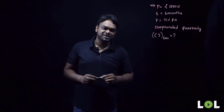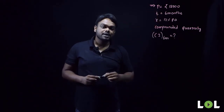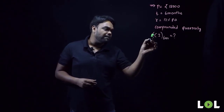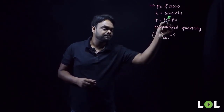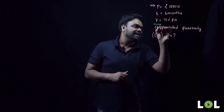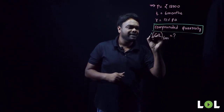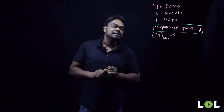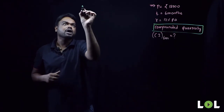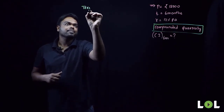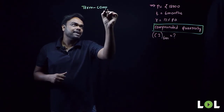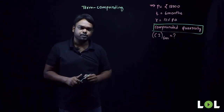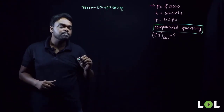Suppose the question is: a sum of 12,000 rupees is compounded quarterly at 12 percent per annum — what is the compound interest for six months? There is a new word here: 'compounded quarterly.' This belongs to the concept called term compounding. Let me first explain what term compounding is, then we'll go back to the problem.